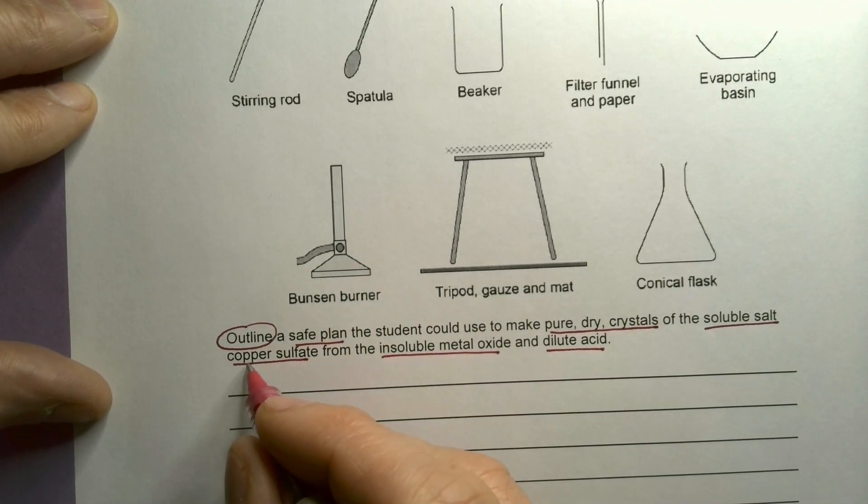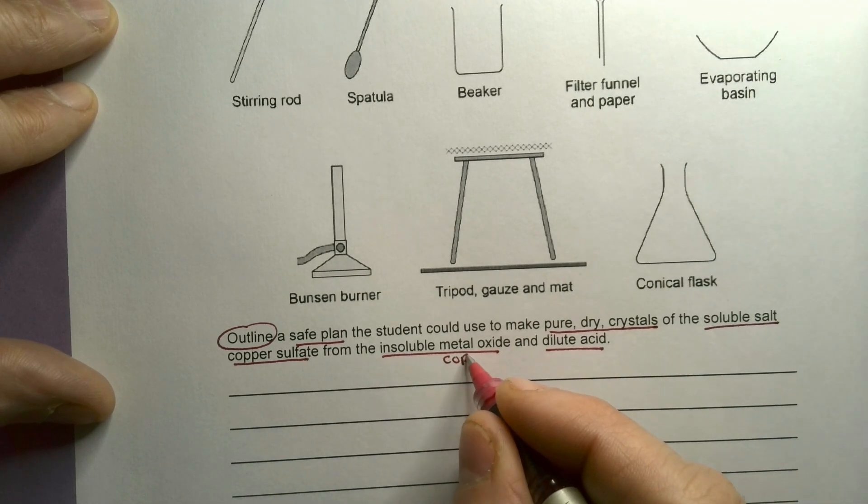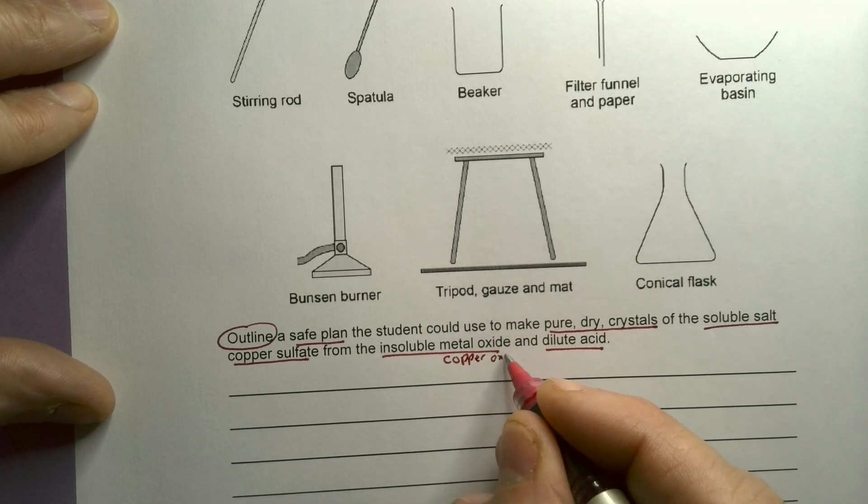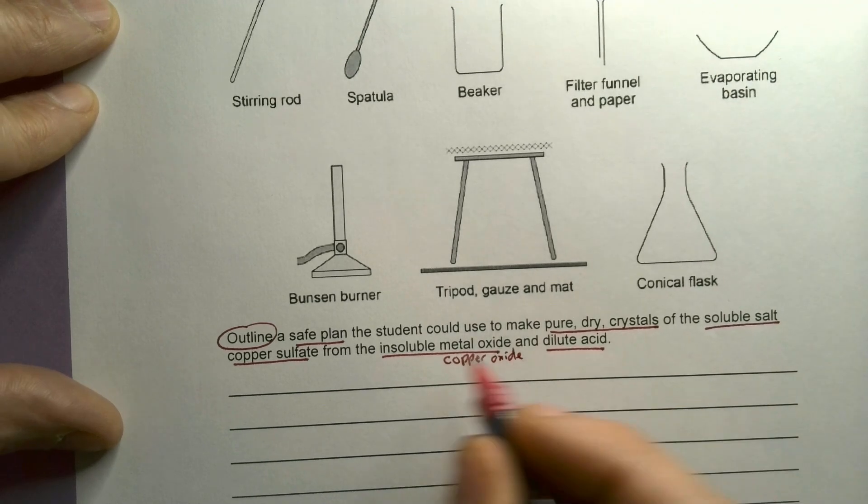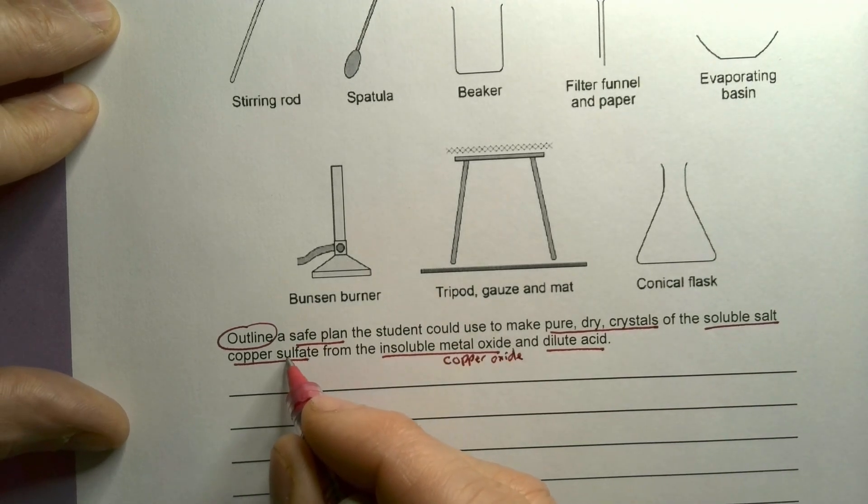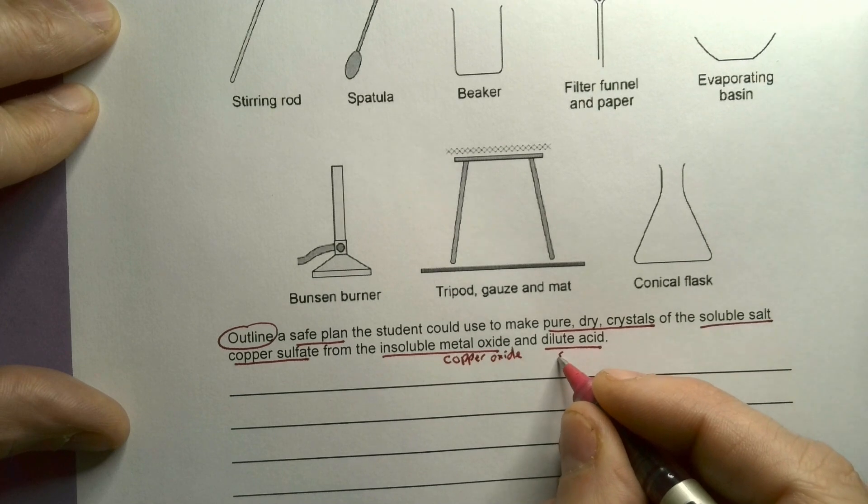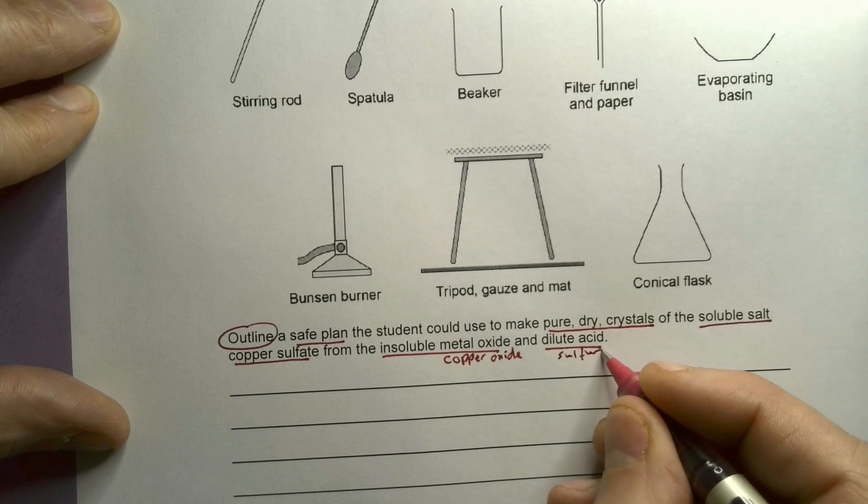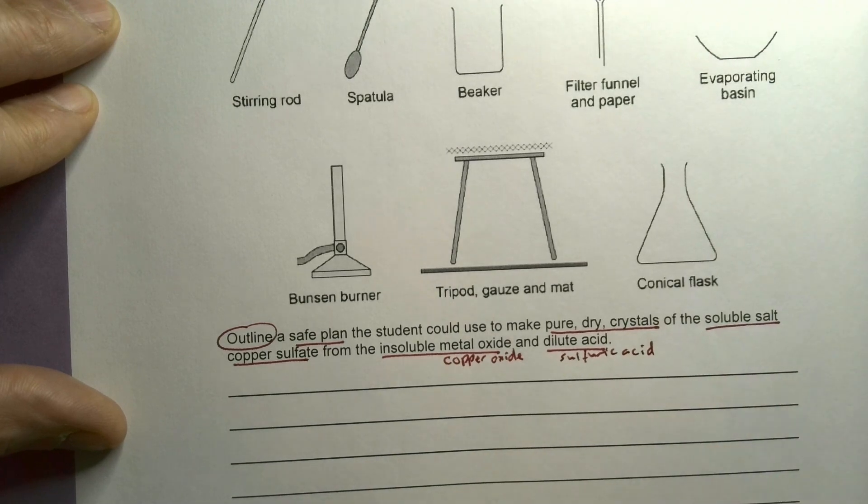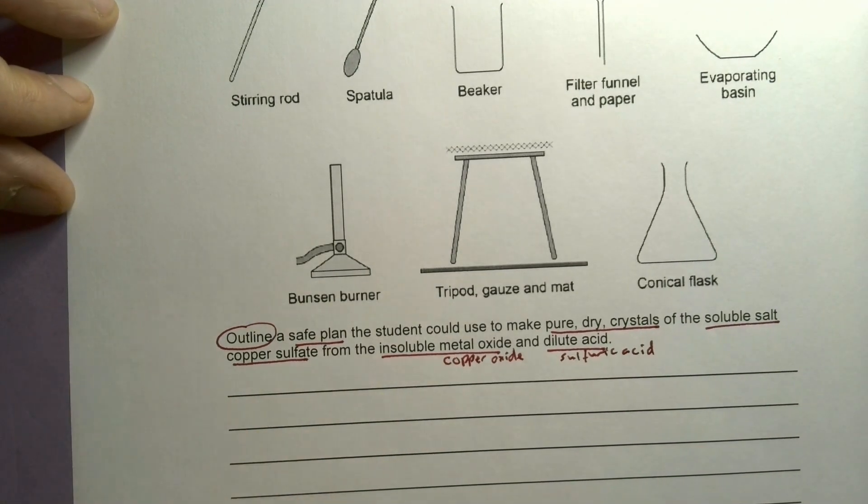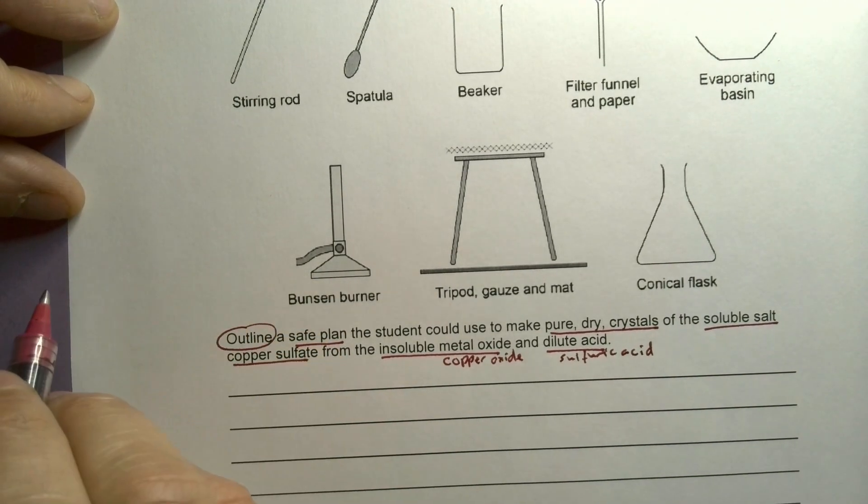Well, if I'm making copper sulphate, that's going to be copper oxide. And the acid will be, because I'm making sulphates, the acid will be sulphuric acid. Okay, and it may well be that up here, not in my answer...